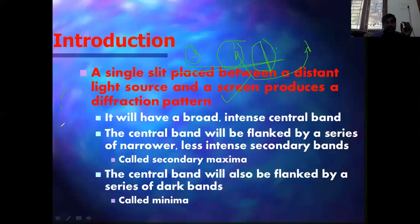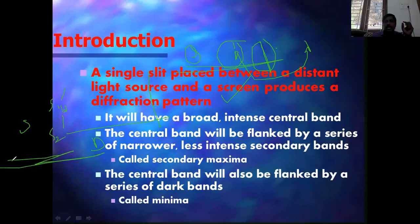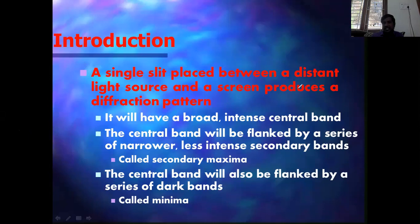For interference (diffraction with two slits), you need two sources S1 and S2. For diffraction alone, you just need a source, a single slit, and a screen — but the wavelength must equal the slit size. This is a four-mark question: the differences between diffraction and interference. In diffraction, you have a broad, intense central band, flanked by a series of narrower, less intense secondary bands, and also flanked by dark bands.